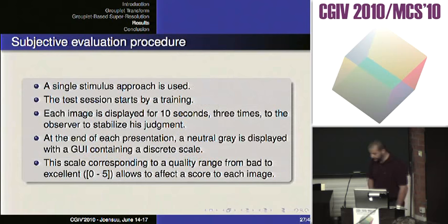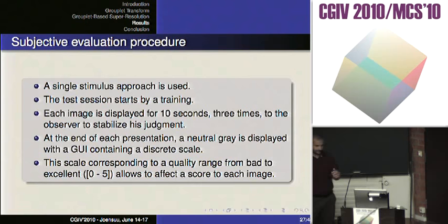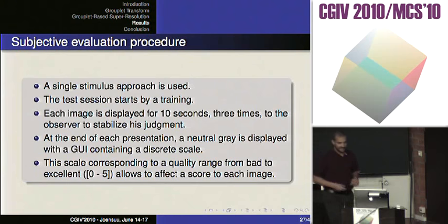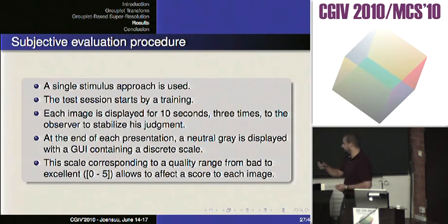The procedure used a single stimulus approach — we displayed the image without reference, because the question asked to observers was: imagine you receive a low-resolution image on your computer and try to see it at higher resolution — what is your score for this interpolation? The test session starts with training. Each image is displayed for 10 seconds three times to stabilize the observer's judgment. At the end of each presentation, a neutral gray is displayed to erase short-term memory and avoid links between images.